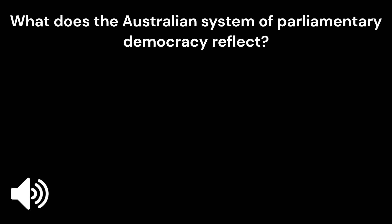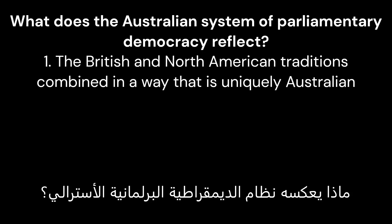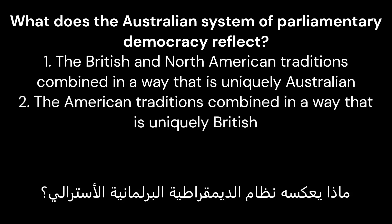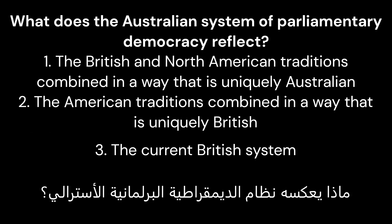What does the Australian system of parliamentary democracy reflect? 1. The British and North American traditions combined in a way that is uniquely Australian. 2. The American traditions combined in a way that is uniquely British. 3. The current British system. The correct answer is 1. The British and North American traditions combined in a way that is uniquely Australian.